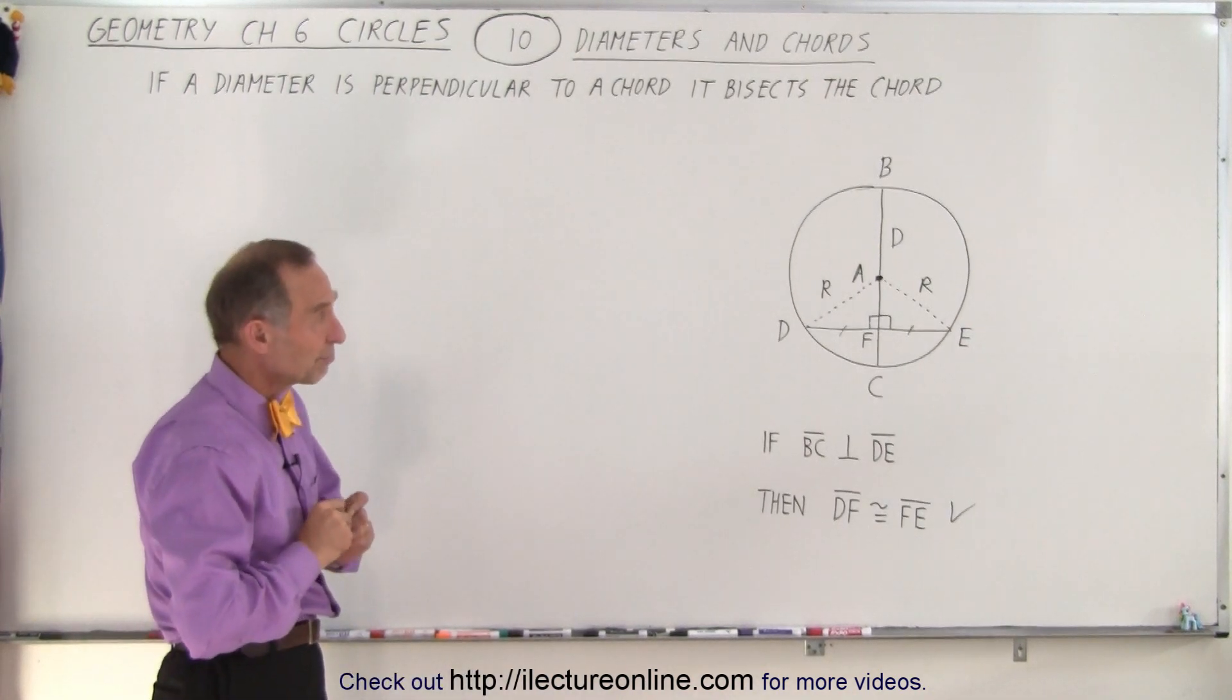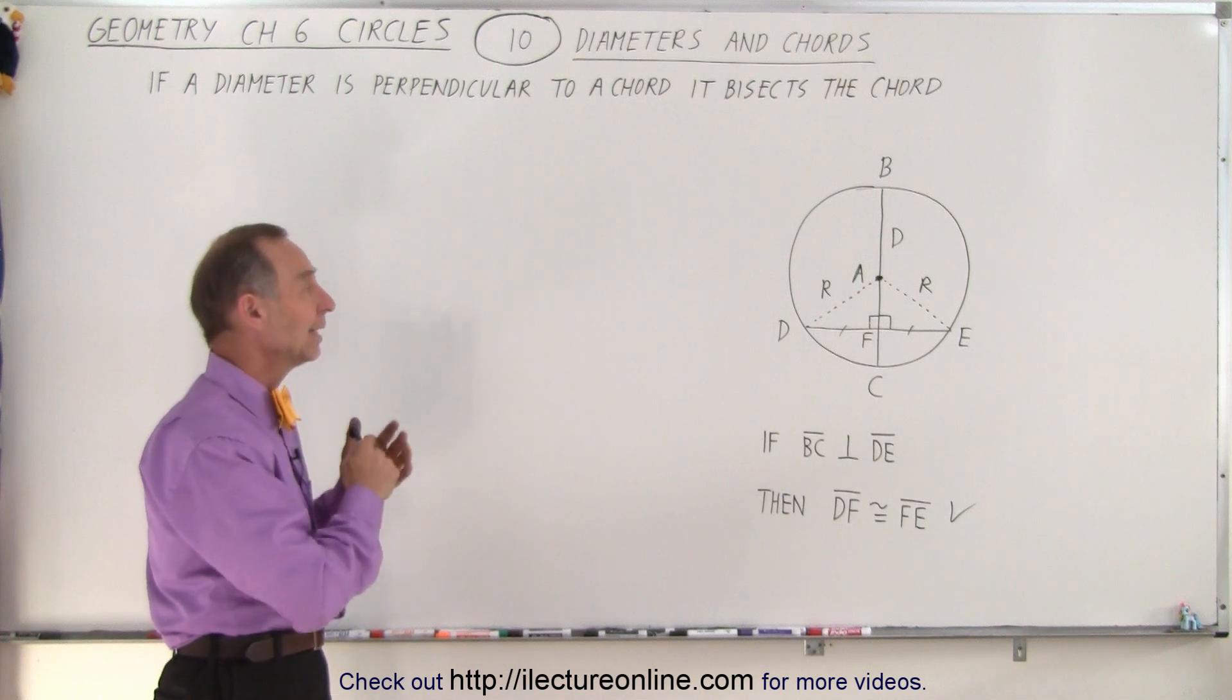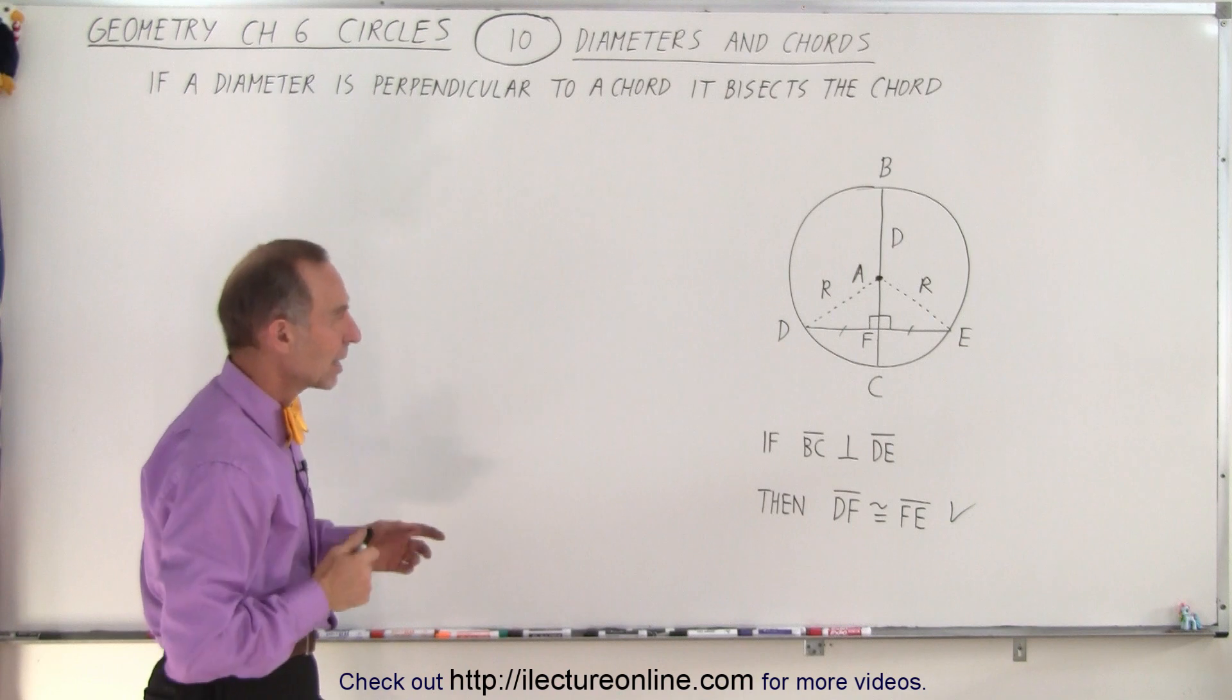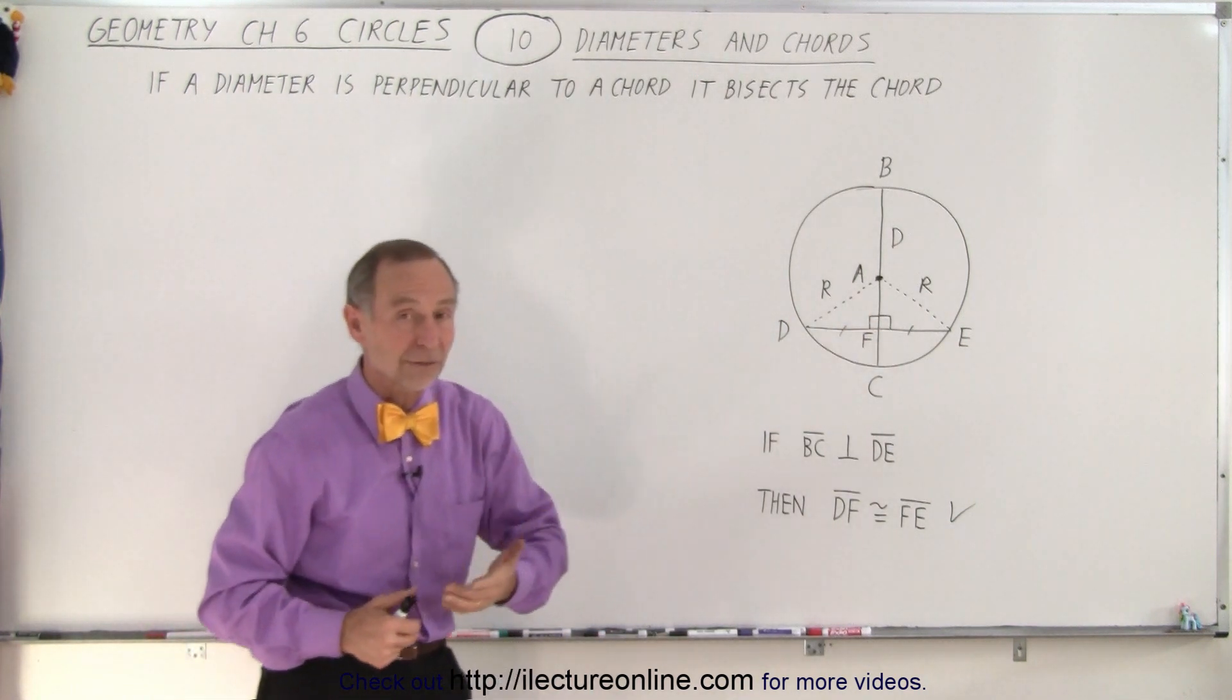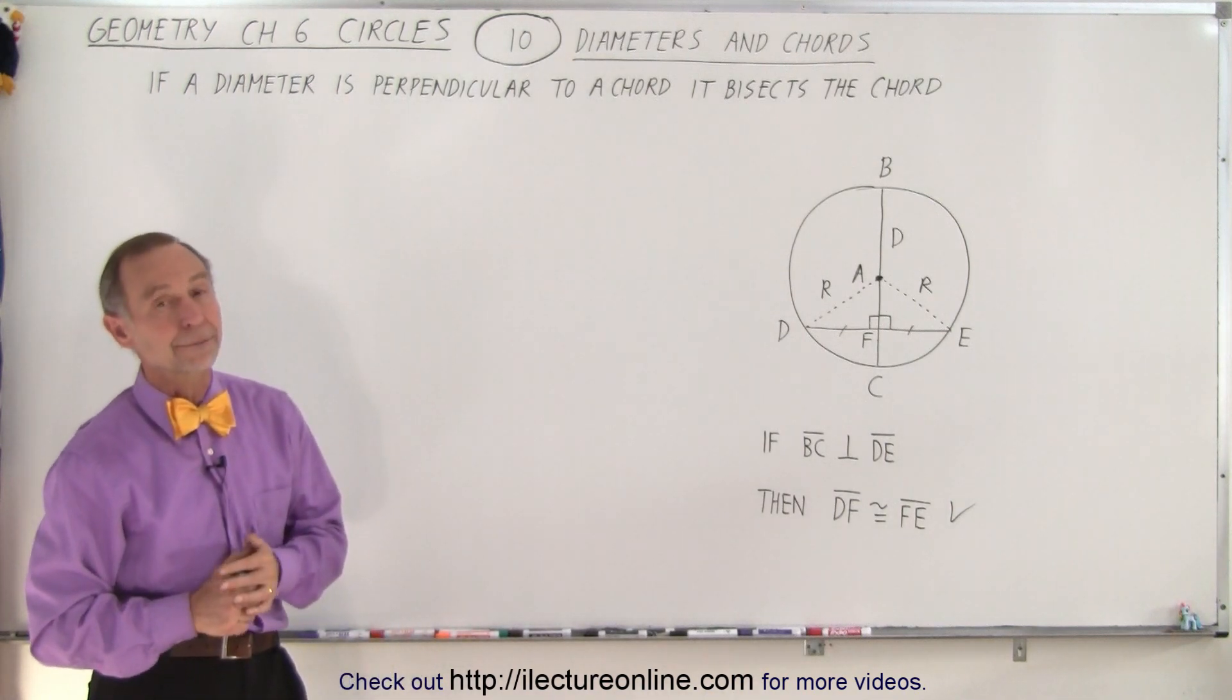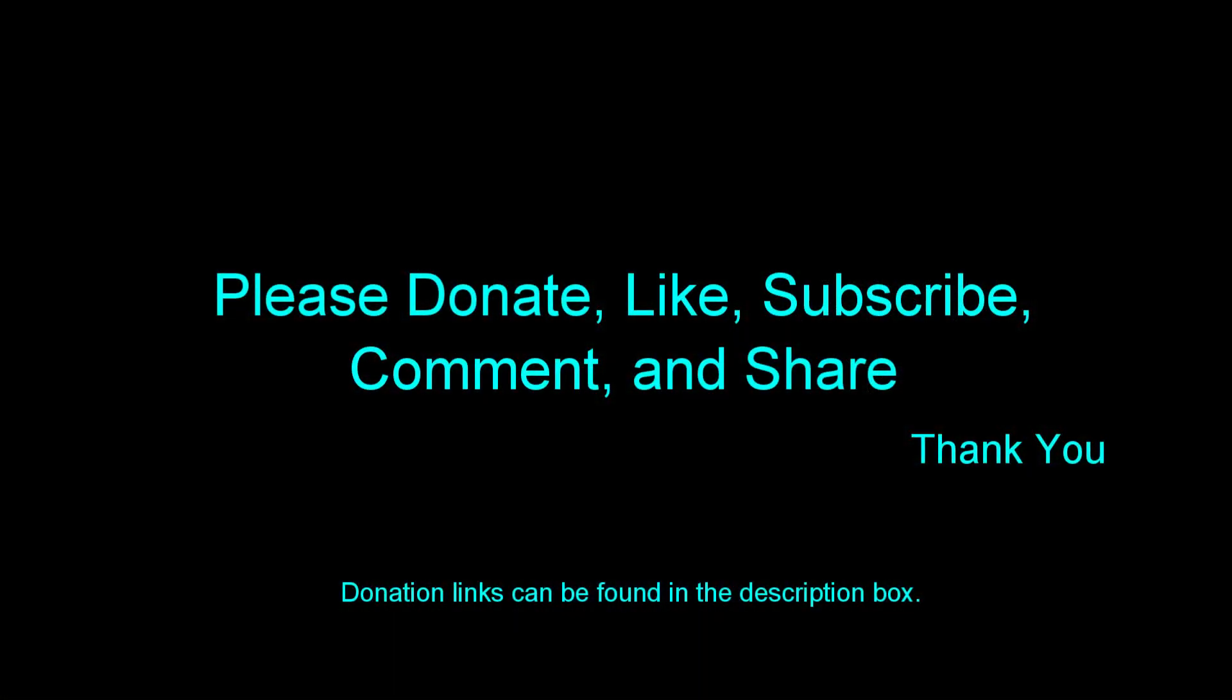And so, very straightforward, very simple - it seems kind of obvious but it's handy to know. A diameter that bisects a chord such that the angle between them is 90 degrees, that is perpendicular, the two halves of the chord will be equal in length. And that is how it's done. So thank you so much for watching.